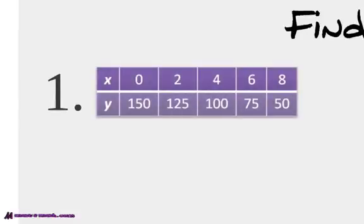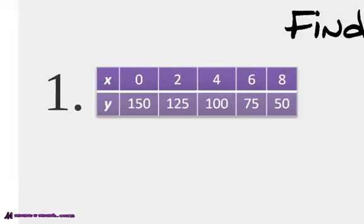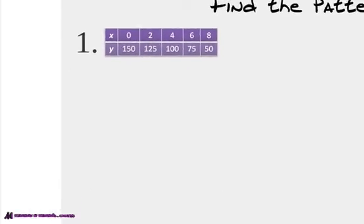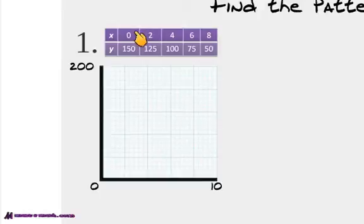Alright, here's the first one. Take a look at it. The x-values start at 0, go to 2, 4, 6, 8. Then the y-values go 150, 125, 100, 75, 50. Is there a pattern here? Well, if you don't immediately see if it's linear or not, the best way to do this is take it to the graph. We've got points: 0 comma 150, 2 comma 125, 4 comma 100, and so forth. So what we're going to do now is graph our dots.